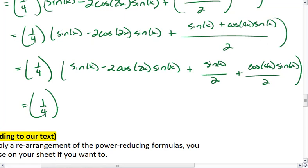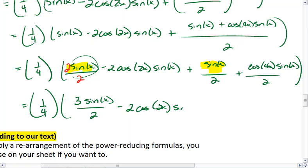And lastly, because we have a sine here and we have a sine here, we can rewrite this sine as 2 sine x over 2, combine the two sines, we get 3 sine x over 2 minus 2 cosine 2x sine x plus cosine 4x sine x all over 2.